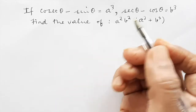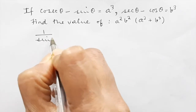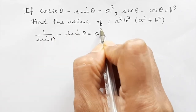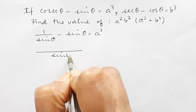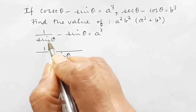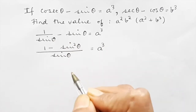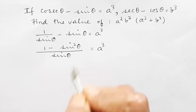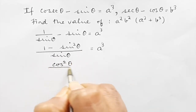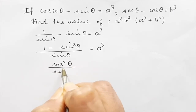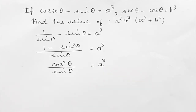So cosec θ is 1/sin θ, and 1/sin θ minus sin θ equals a³. Taking the LCM, we get (1 minus sin²θ) / sin θ = a³. Now we know that 1 minus sin²θ is cos²θ, so we write cos²θ / sin θ = a³.